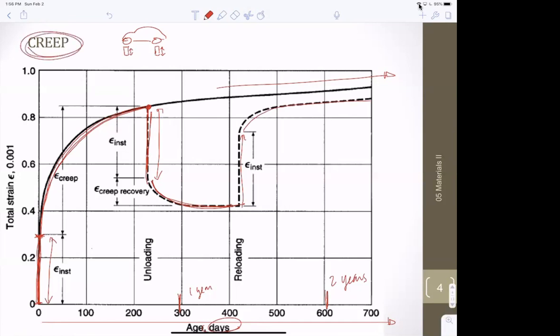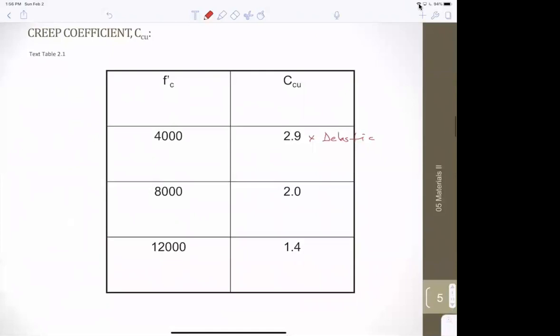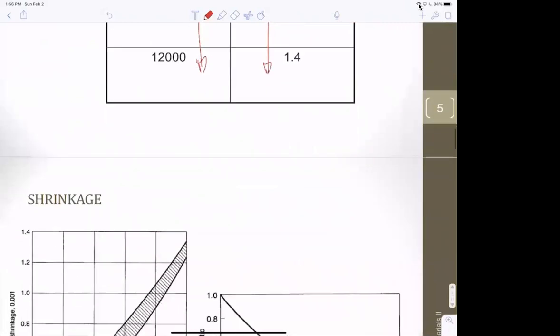So this is kind of an important thing for deflections. Your deflections will increase over time. How much? Well, here's a creep coefficient. And what this is, is times the elastic deformation. So if you have 4000 psi concrete, you get an extra three times of deflection over time. So that means if it deflected one inch, your beam deflects one inch, 20 years later, it'll deflect another three inches for a total of four inches. And as you increase the strength of the concrete, the creep decreases. But that's huge. The deflection will be four times what you think.